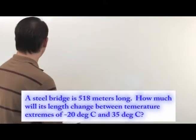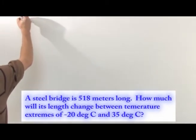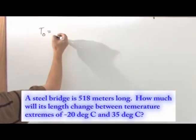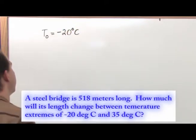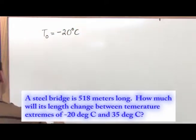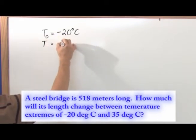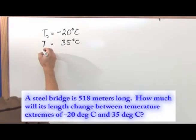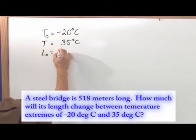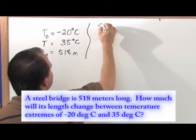So what we're going to do is first write down what we know. The initial temperature was given as negative 20 degrees Celsius. The final temperature, because we're talking about the temperature extremes, was 35 degrees Celsius. We know that the initial length of the bridge was 518 meters and we know that it's a steel bridge.